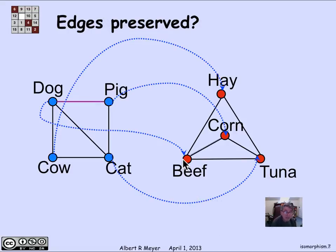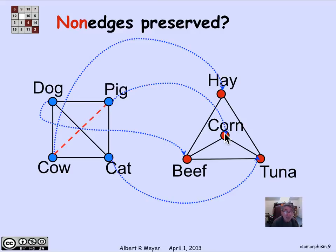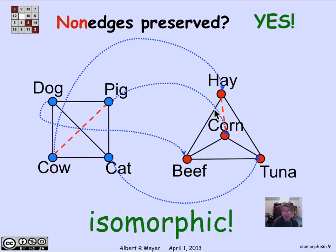What does edge-preserving mean? Well, there's an edge on the left between dog and pig. That means there should be an edge on the right between where they go to. So there ought to be an edge between beef and corn, because that's where dog and pig go. And indeed, there's an edge there. We also have to check non-edges: since edge-preserving is an if and only if, there's an edge on the right if and only if there's an edge on the left. There's no edge between cow and pig, and cow goes to hay and pig goes to corn — and sure enough, there is no edge on the right between hay and corn. These two graphs are isomorphic, and that function f is in fact the edge-preserving bijection.